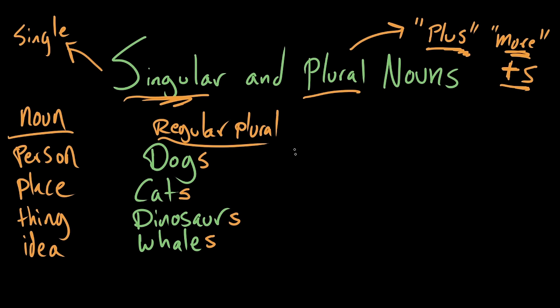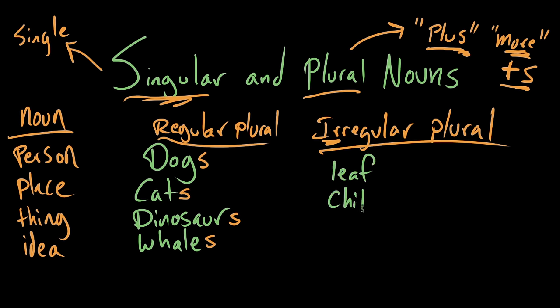However, here's the bad news, there are some irregular plurals. They are not regular, thus irregular. So now we have words like leaf and child and fungus, which is like a mushroom, mouse, and sheep.